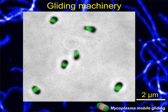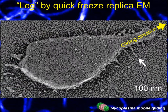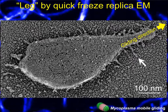The gliding machinery localizes at the green part — the base of the membrane protrusion. By quick-freeze replica electron microscopy, leg-like structures are visualized sticking up from the gliding machinery, as marked by the white arrow.